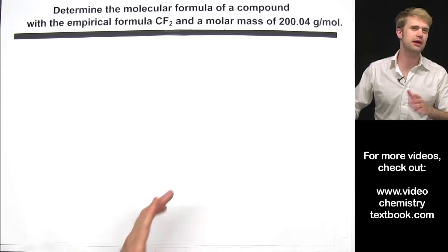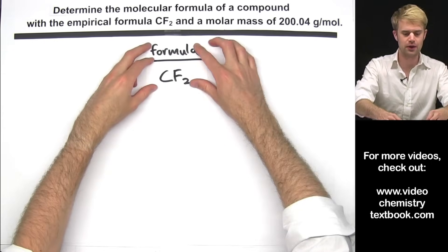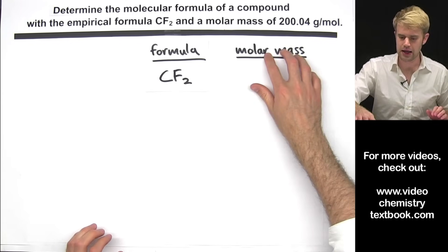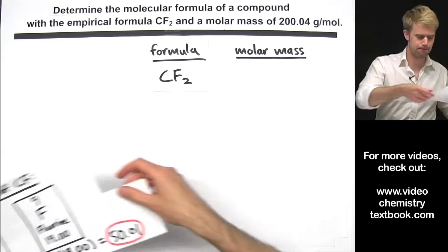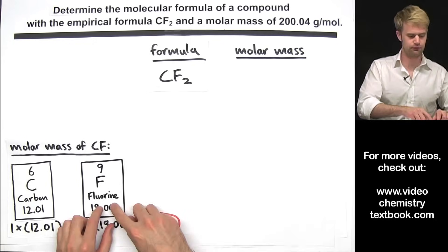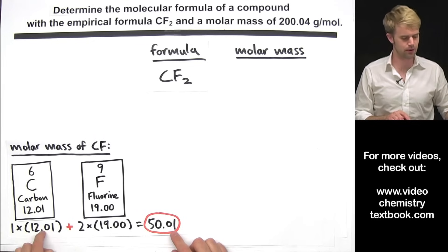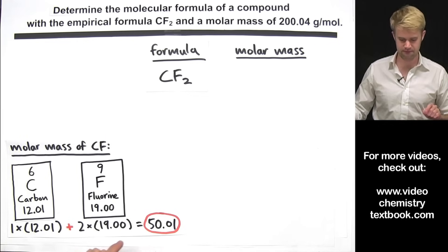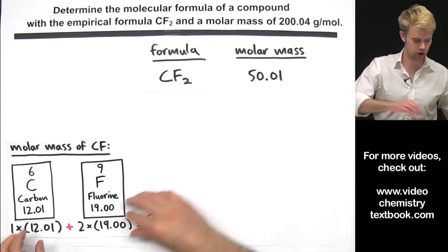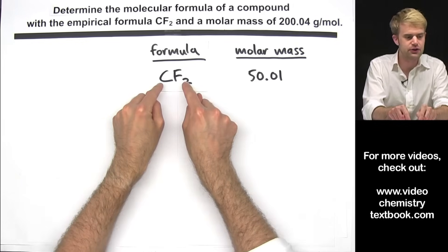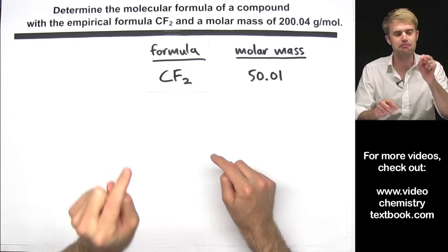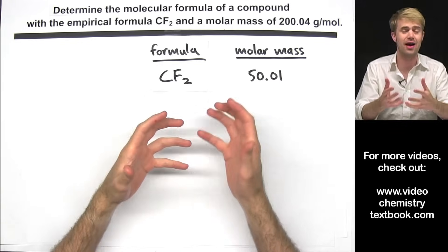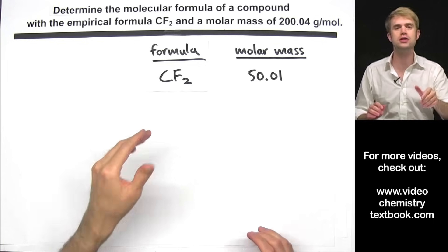Let's begin by making a chart. Here's the empirical formula that we're starting with, and I want to find its molar mass. To do that, I'll look up carbon and fluorine on the periodic table. I do 1 times the molar mass of carbon plus 2 times the molar mass of fluorine and I get 50.01. CF2 is an empirical formula, which means that the ratio of atoms here is as simplified or reduced as possible.